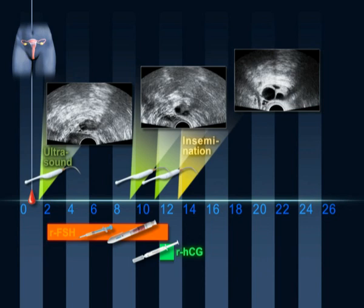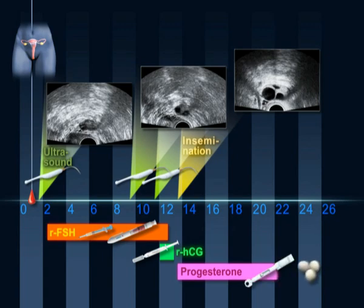After insemination, a supplement of progesterone is administered vaginally for two weeks.